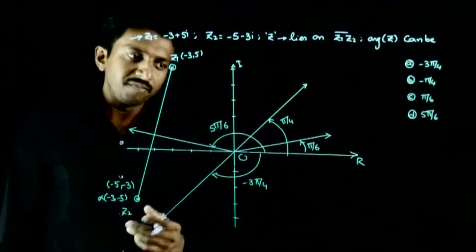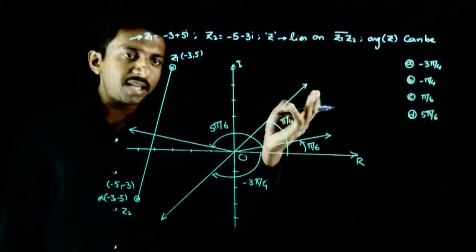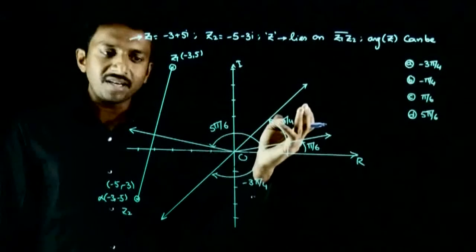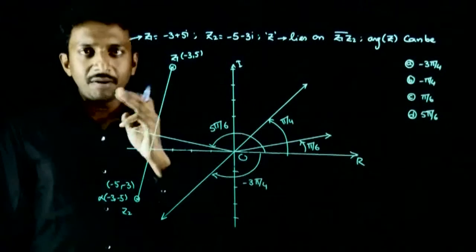Similarly, if the argument is -π/4, the ray will go like this. Again, there is no point on this ray which is lying on this line.